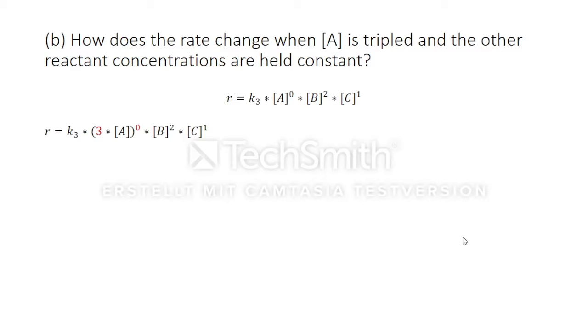As you can see here, by tripling concentration A, the result will not be influenced because the factor to the power of zero is always one. So the rate doesn't change.